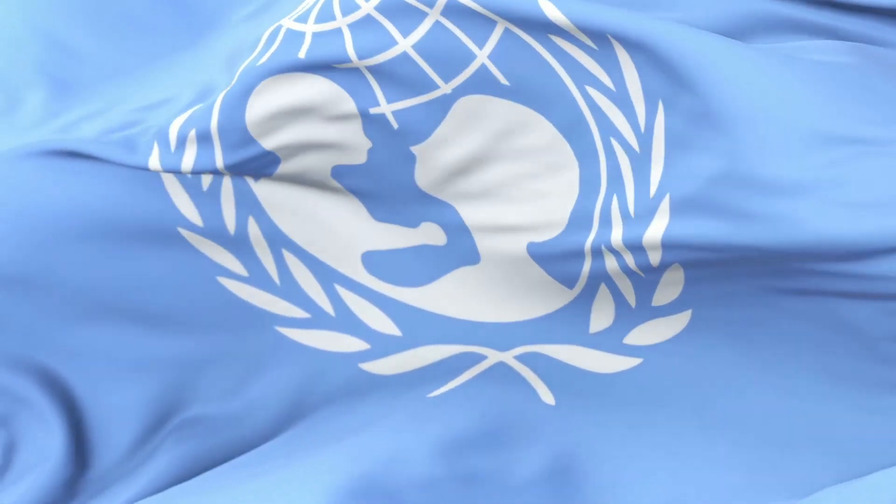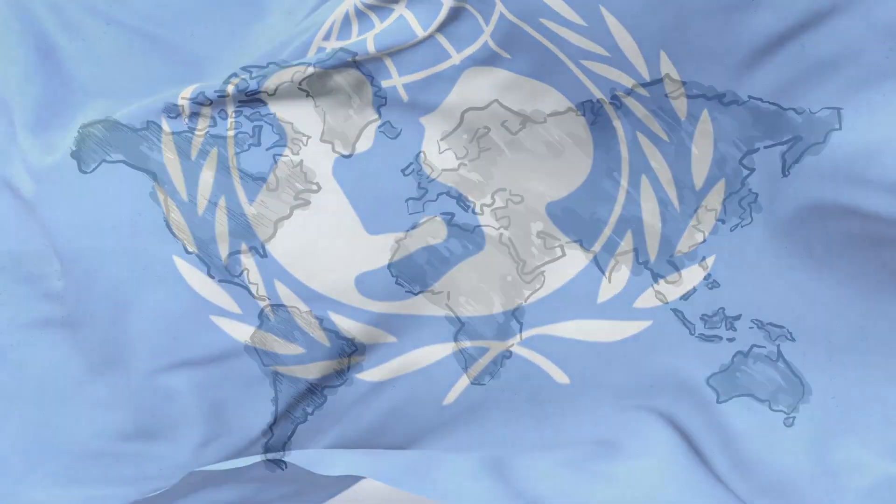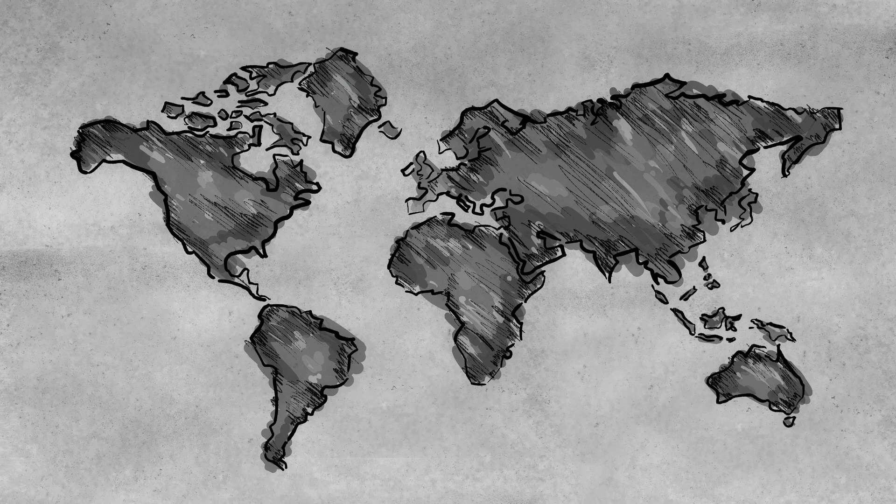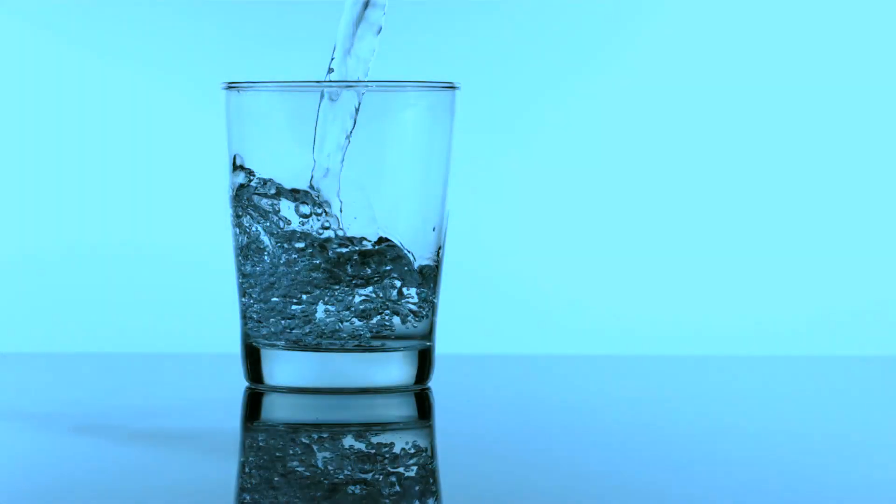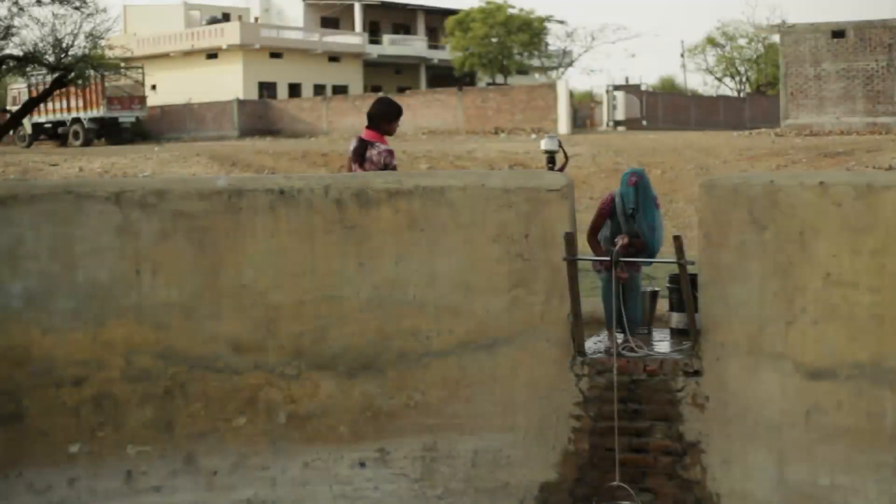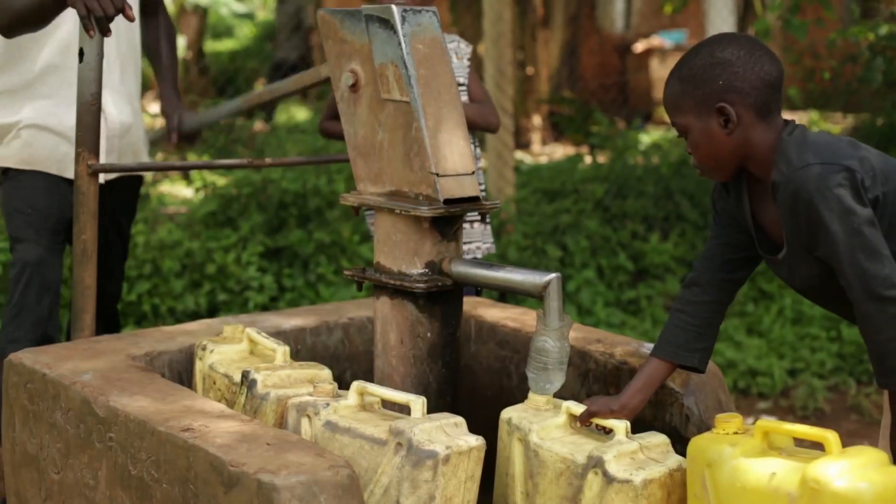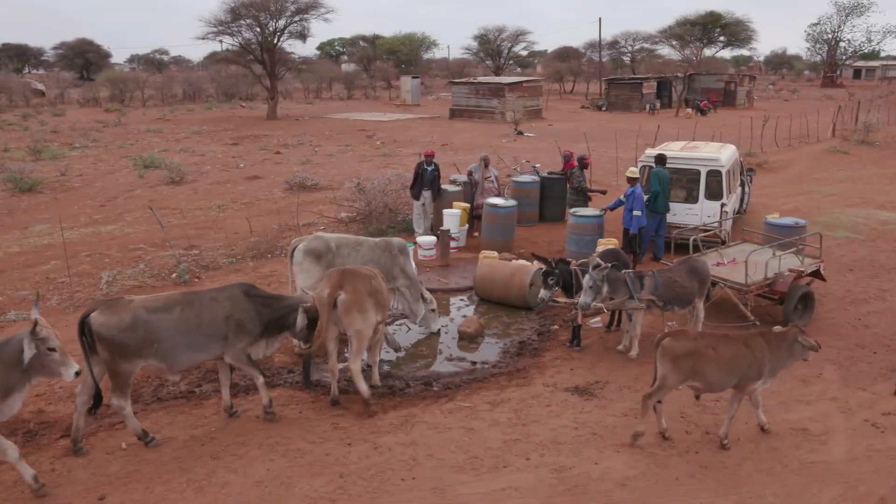According to WHO and UNICEF 2017 findings, over 2 billion people lack safe drinking water at home. 8 out of 10 people without access to clean water live in rural areas.